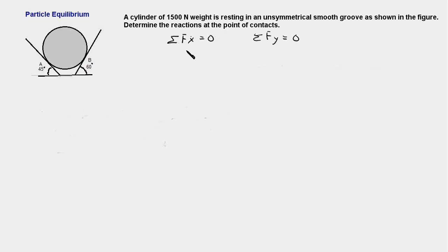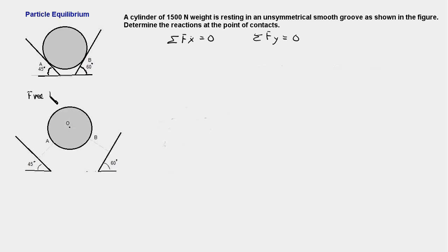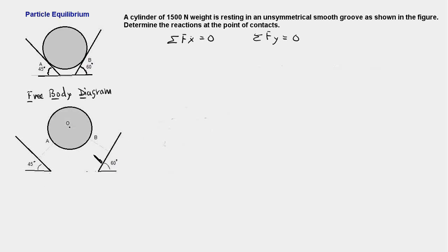So the first step in solving the problem is to draw a free body diagram. Here is the free body diagram of the cylinder — in short we call it FBD. The idea in drawing a FBD is to isolate the body of interest, in this case the cylinder, from its surrounding elements, and in the process show the forces of interaction between the body and its surrounding elements — in this case the two surfaces of the groove.